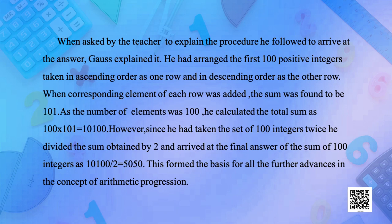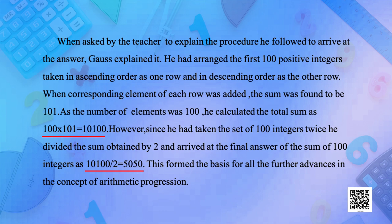When asked to explain, Gauss said he arranged the first hundred positive integers in ascending order as one row and in descending order as the other row. When corresponding elements of each row were added, the sum was found to be 101. Since there were 100 elements, he calculated the total as 100 × 101 = 10,100. Since he had taken the set twice, he divided by 2, arriving at 5,050. This forms the basis of arithmetic progression.